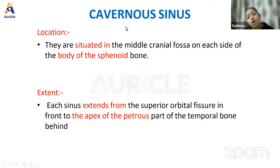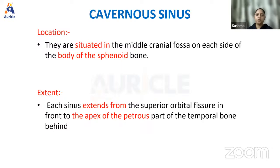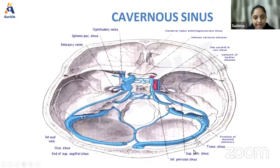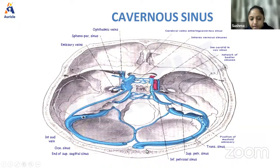The most important sinus is the cavernous sinus. It is situated in the middle cranial fossa on each side of the body of the sphenoid bone. Each sinus extends from the superior orbital fissure in front to the apex of the petrous part of the temporal bone behind. You can see the body of the sphenoid, the cavernous sinus on either side, the confluence of sinuses at the internal occipital protuberance, and the internal carotid artery related to the cavernous sinus.